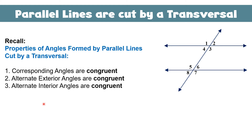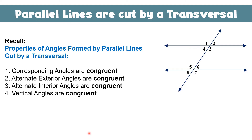Third, alternate interior angles are congruent. The alternate interior angle pairs in the figure are 3 and 5, and 4 and 6. Fourth, vertical angles are congruent. For example, angles 1 and 3 are vertical angles, so they have the same measurement.